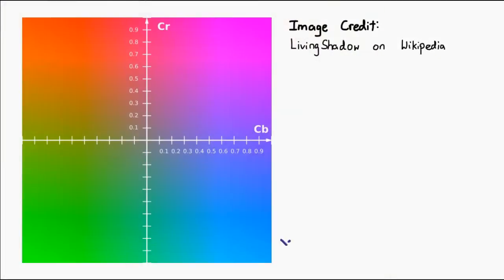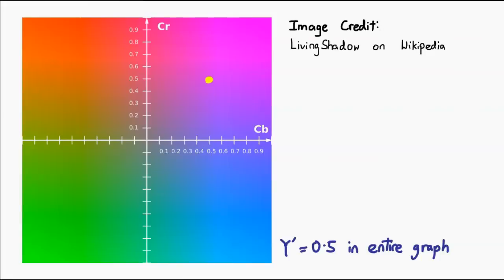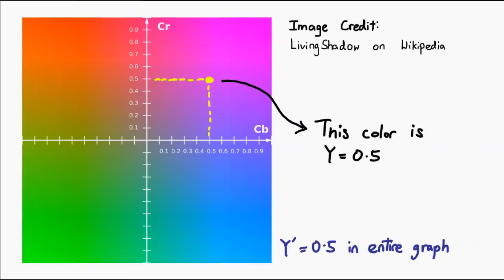The way CB and CR actually work can be easily explained by looking at a graph from Wikipedia. In this graph, Y is set to 0.5. The horizontal axis represents CB, and the vertical axis represents CR. So for example, if you want a purplish color, that would be about 0.5 on the CB scale and 0.5 on the CR scale. That is essentially how this color representation works.